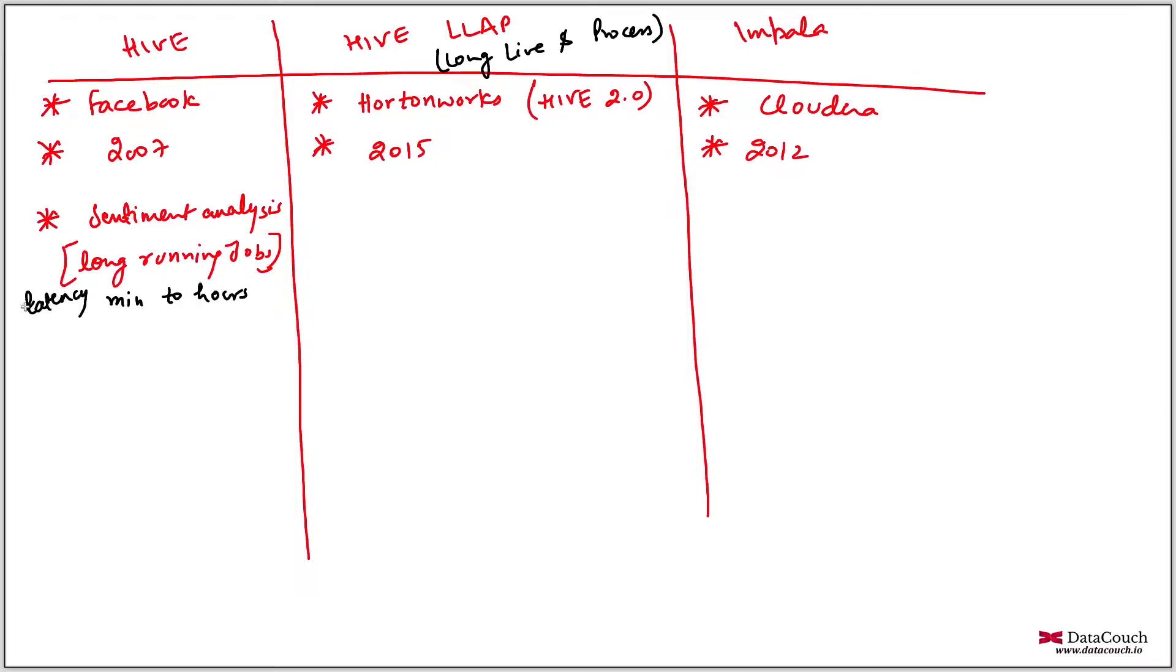Now Hive LLAP is for ad hoc analysis and you will be using these for short lived queries, so when you have short lived queries then we will be using it. So same thing here also, interactive queries, short lived queries, ad hoc queries.